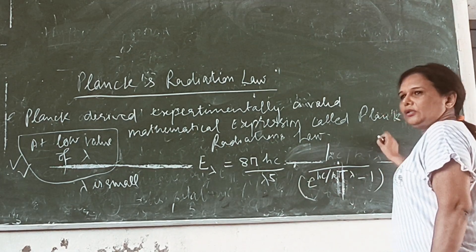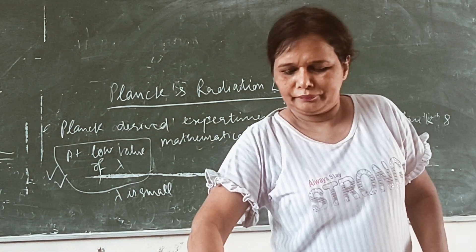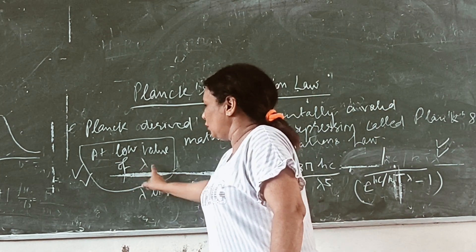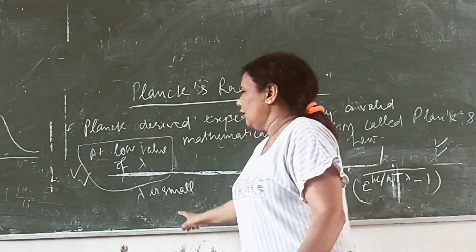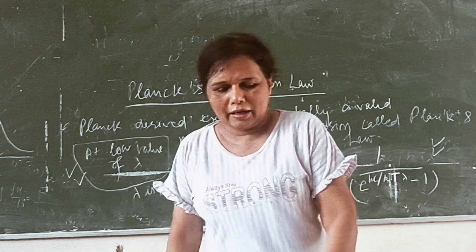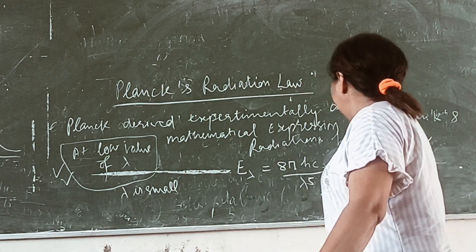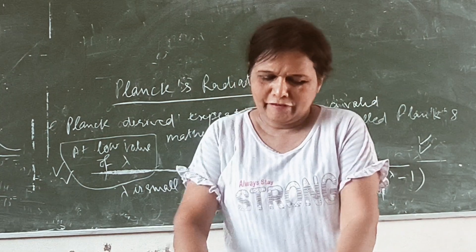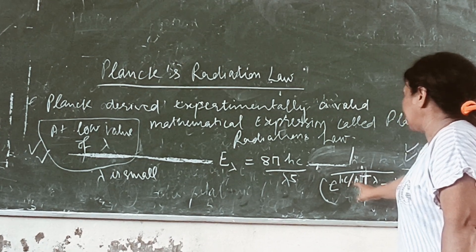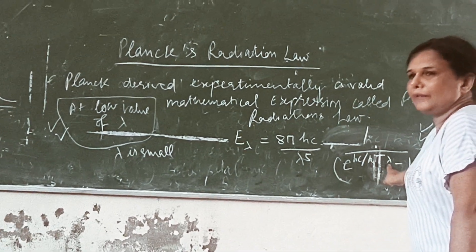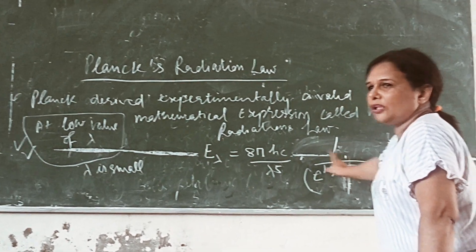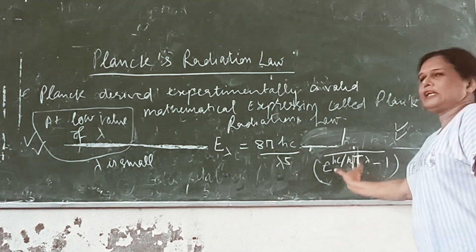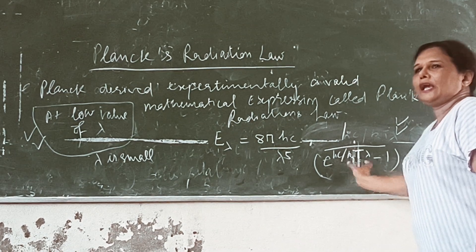As we have written, at low value of λ, when λ is rather small, the exponential term e raised to power hc over kTλ will be greater than 1. The denominator value is smaller, so the exponential term will be greater as compared to unity.